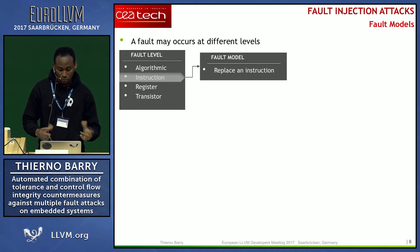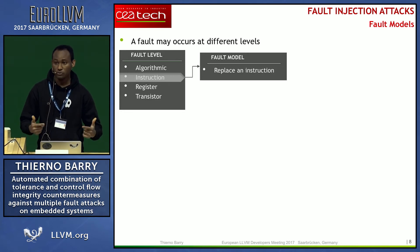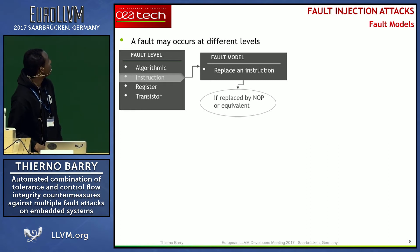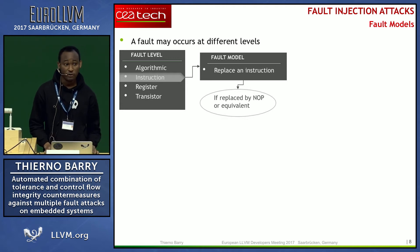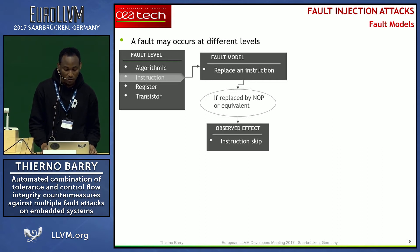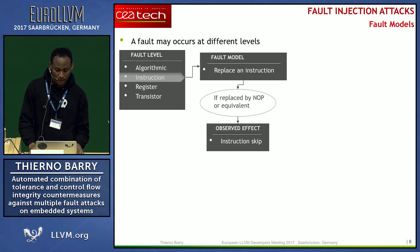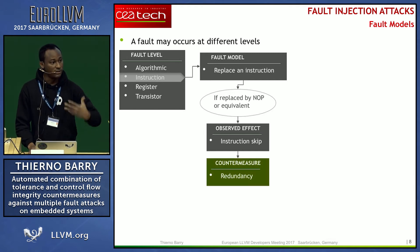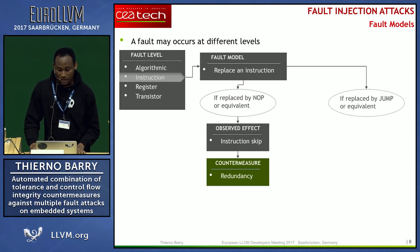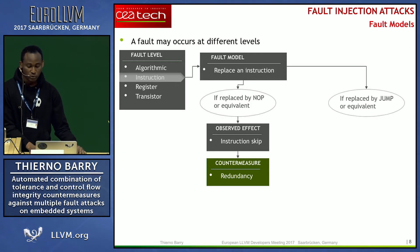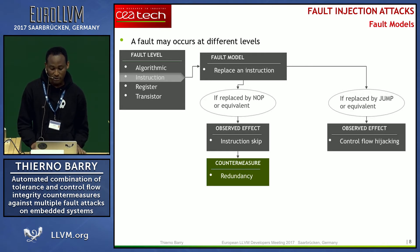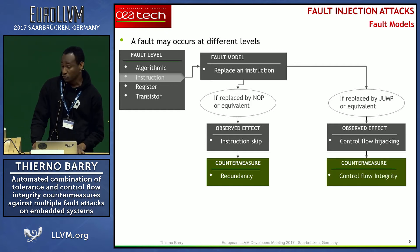If the replacement is a NOP or something equivalent — an instruction that doesn't change the state of the program — we observe an instruction skip, and the countermeasure is redundant execution so that if one instance is skipped, the second one executes. The second model is when the instruction is replaced by a jump-like instruction; we call this control flow hijacking, and the countermeasure is control flow integrity.